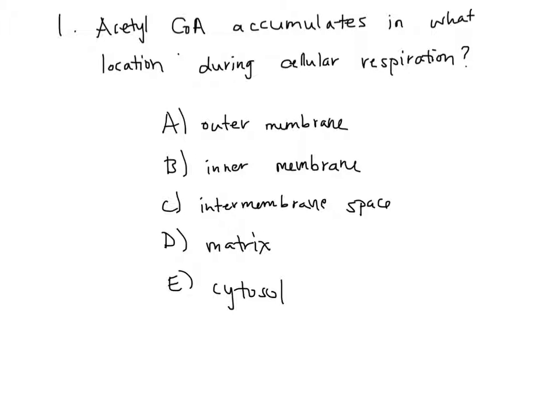All right. Well, if you said the answer was D, matrix, then you'd be absolutely correct. Remember that in the process of the citric acid cycle, acetyl-CoA is released right when acetyl-CoA adds itself to oxaloacetate to produce citrate. As a result, because this process happens in the matrix, you can expect acetyl-CoA to continue to accumulate in the matrix.